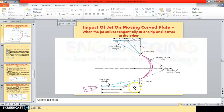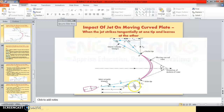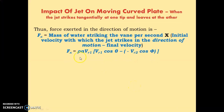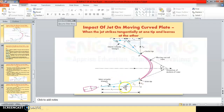Vr1 has two components: in the direction of motion it is Cd, and perpendicular to the motion it is Vd. The component of Vr1 in the direction of motion is Cd, which equals Vr1·cosθ, since cosθ equals adjacent over hypotenuse (Cd over Vr1). So the initial velocity with which the jet strikes in the direction of motion is Vr1·cosθ.